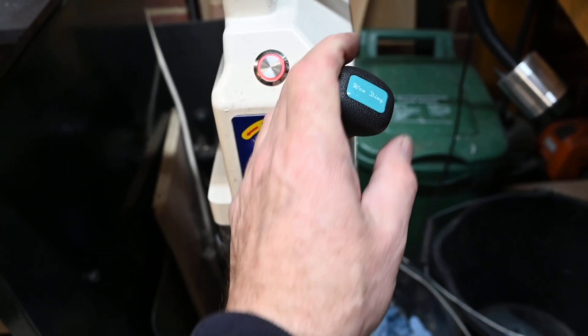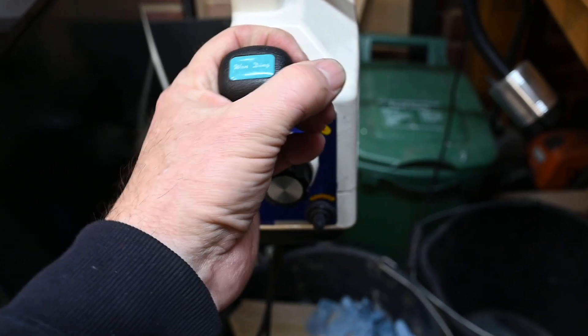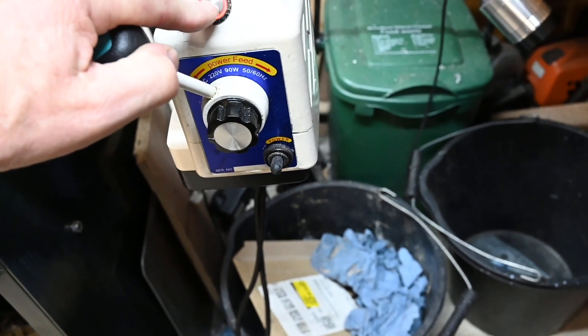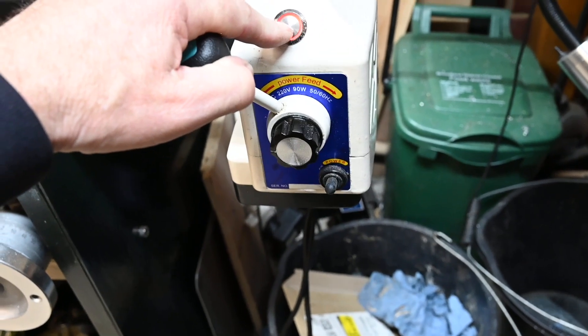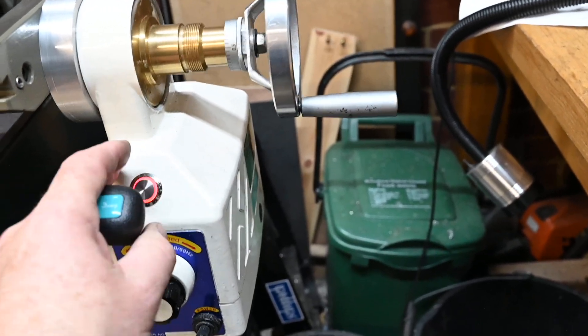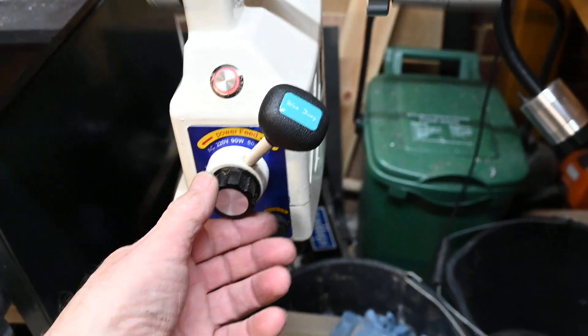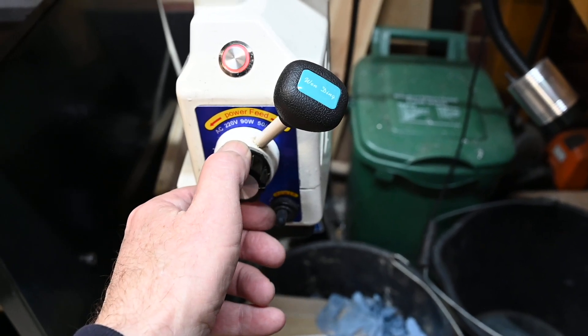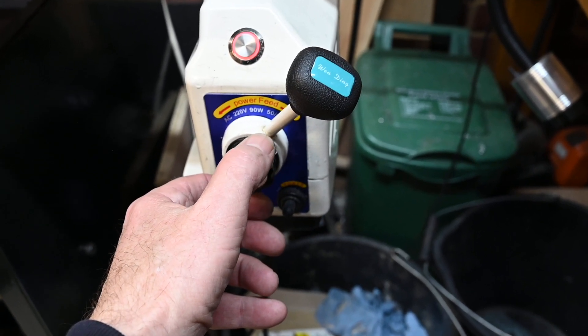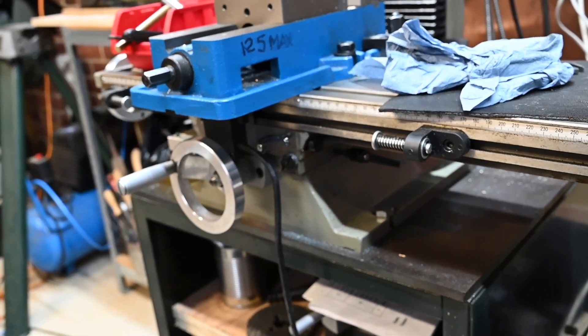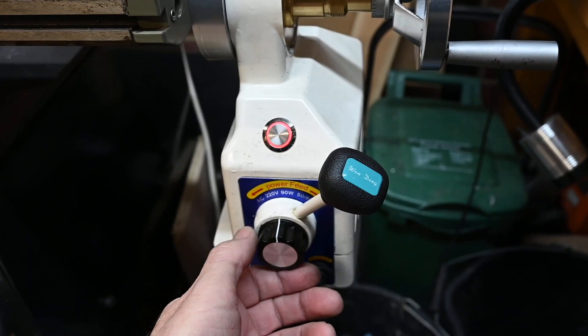The controls for the power feed: this moves the table right, moves the table left. To move the table quickly, you put it in left and press the button, that zooms it along. Or you can adjust the table speed by this knob. That's full at the moment and you can slow it right down to a snail's pace really, or nothing.